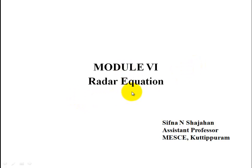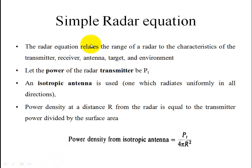Module 6: Radar Equation. The radar equation relates the range of a radar to the characteristics of the transmitter, receiver, antenna, target, and the environment. The radar equation calculates the chain from transmitting antenna to receiving antenna.